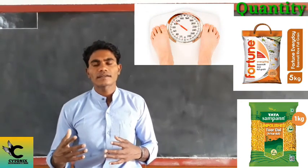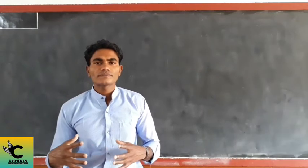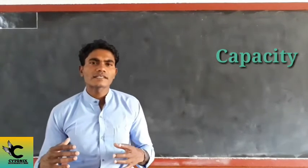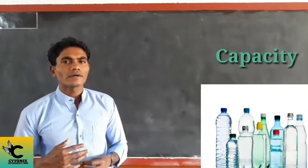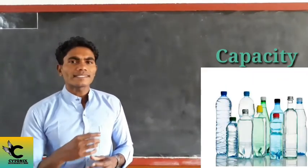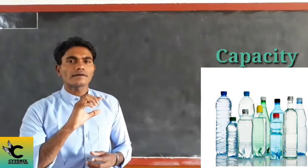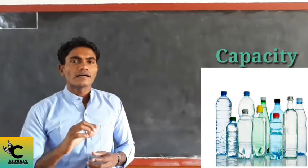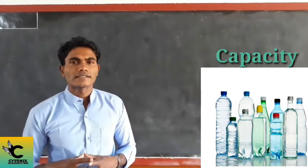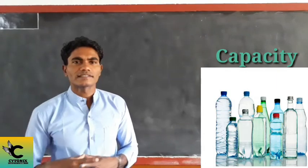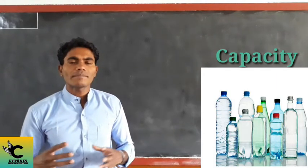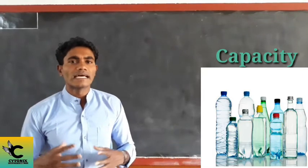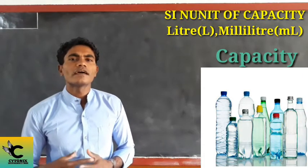Another physical quantity is capacity. Capacity refers to how much a container can hold. You can see on the screen that one bottle is either half full or completely full — that quantity of capacity is measured as half a liter or one liter. The standard units for capacity are liters and milliliters.